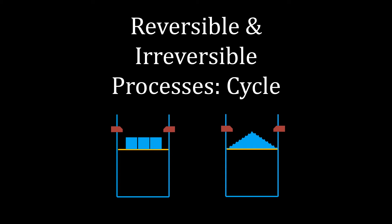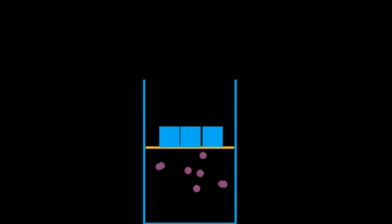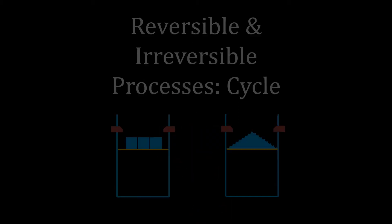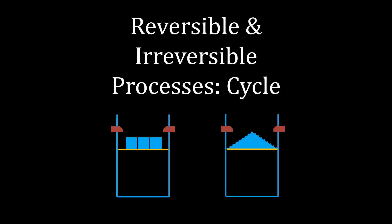In this video, we will consider compression so that we understand reversible and irreversible cycles. It means adding mass and getting the system back to state one. In other words, work is done on the system. Let's start with the reversible compression process.